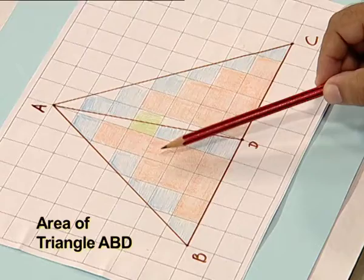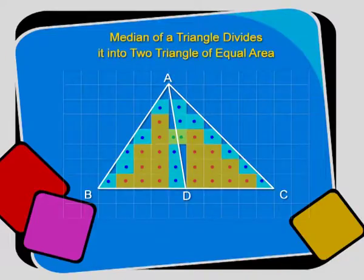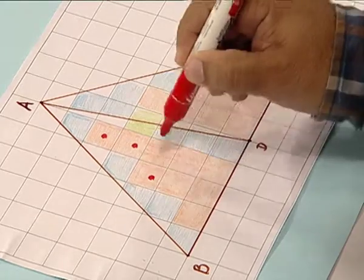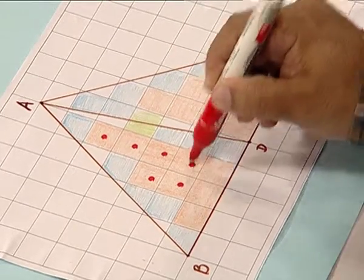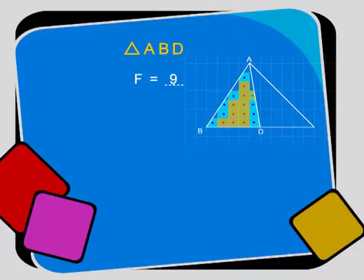Now let us find the area of triangle ABD. Let us count the number of fully filled squares. Fully filled squares are denoted by a red dot — 1, 2, 3, 4, 5, 6, 7, 8, 9. So fully filled squares are 9 in number.